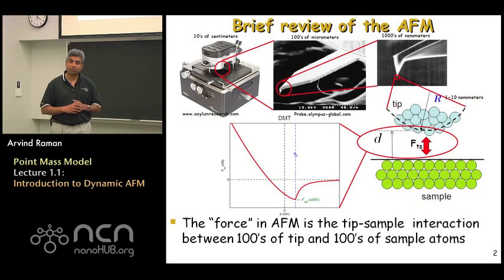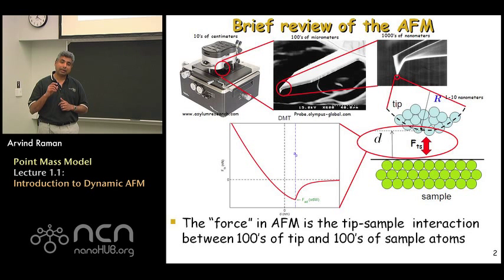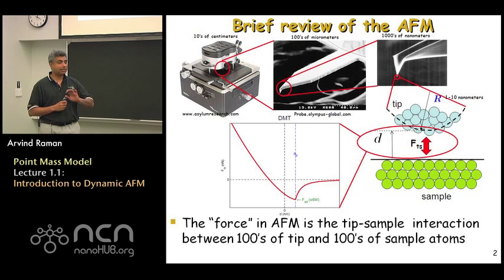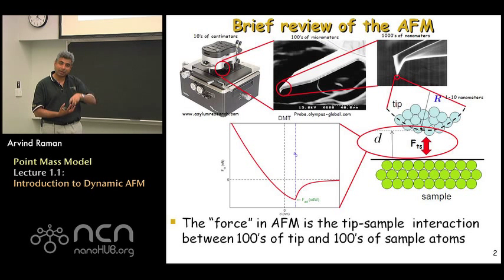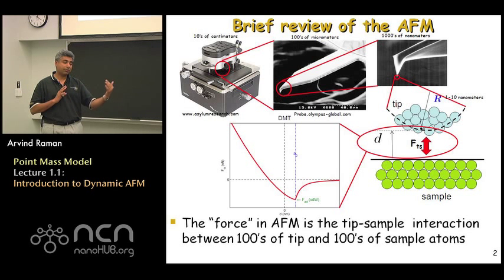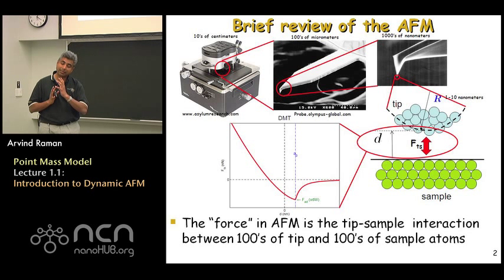Shown at the bottom left is a typical force versus distance graph from Part One. F_TS is the force between the tip and the sample; D is the gap between the lowermost atoms on the tip and the uppermost atoms on the surface. When D is very large, interaction forces are zero. As D decreases, attractive forces develop — a negative force that tends to suck the tip onto the sample. A positive force is repulsive. So we get this canonical attractive-repulsive graph: attractive initially, then repulsive as the tip indents the sample.